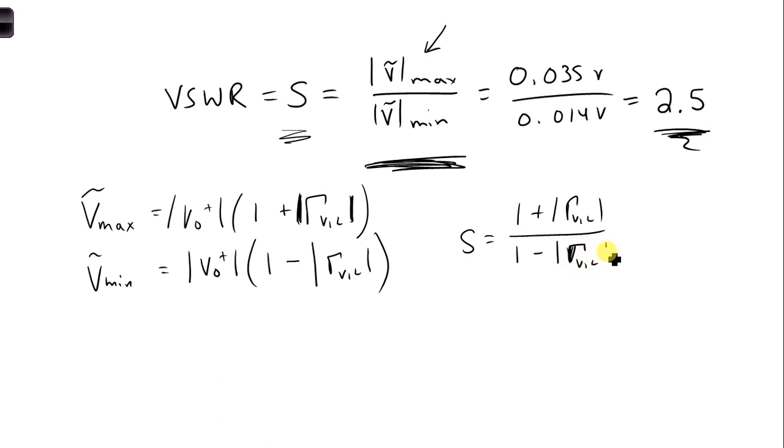So now we can rearrange terms and solve for the voltage reflection coefficient at the load, because we know this is equal to 2.5. So for that, we get S minus 1 over S plus 1. We can plug in 2.5 minus 1 over 2.5 plus 1, and we get 0.43.